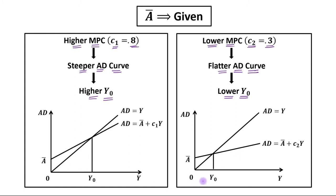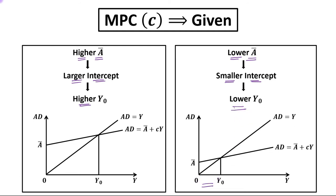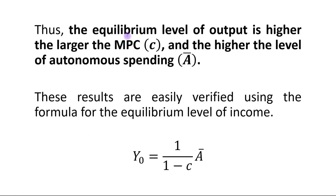In the same way, if MPC is given, there will also be two cases: higher autonomous spending and lower autonomous spending. Higher a_bar means a larger intercept, and lower a_bar means a smaller intercept. In the case of a higher intercept, the equilibrium level of output is higher, and with a smaller intercept it is lower.